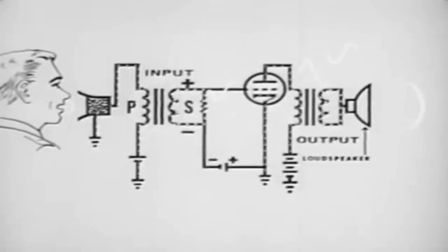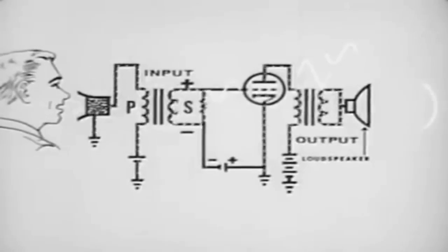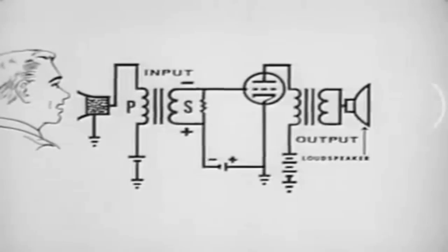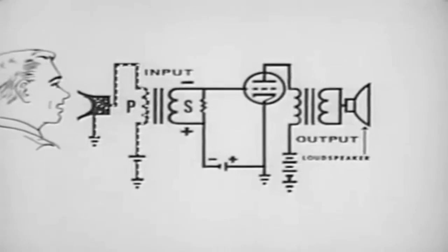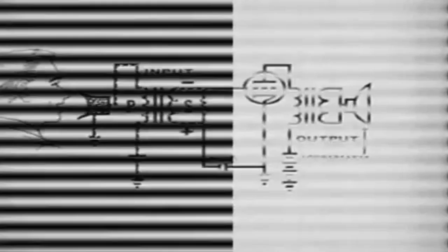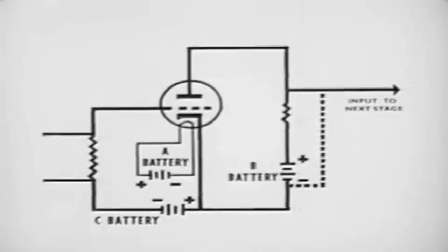Each of these steps causes a loss of a portion of the energy. We restore the lost energy by use of batteries and a vacuum tube amplifier.